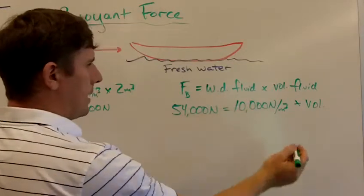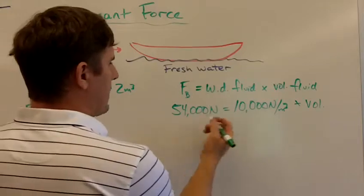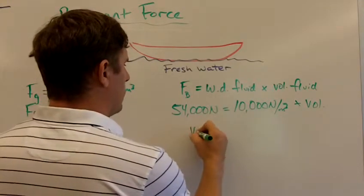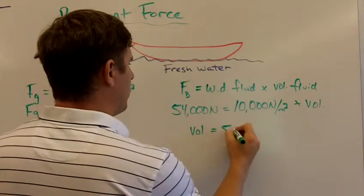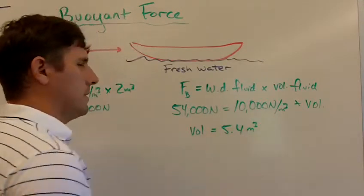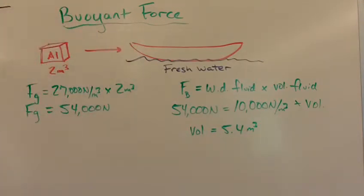Alright, so divide both sides by 10,000, and we end up with a volume of water displaced that is going to be 5.4 cubic meters. Alright, so that's how much water must be displaced by this canoe in order to make it float.